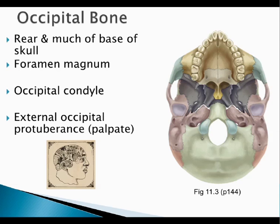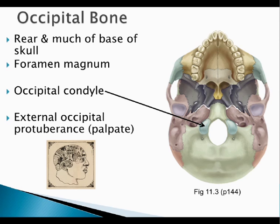The occipital bone makes up the back of your skull and a lot of the base as well. It goes right around your spinal cord through a structure called the foramen magnum — 'foramen' means hole, 'magnum' means large, so it's the big hole where your spinal cord passes through. The occipital condyles — a condyle is a knuckle-like area of articulation — are where C1, the cervical vertebra called the atlas, articulates with the skull. The occipital condyles sit on either side of the foramen magnum.